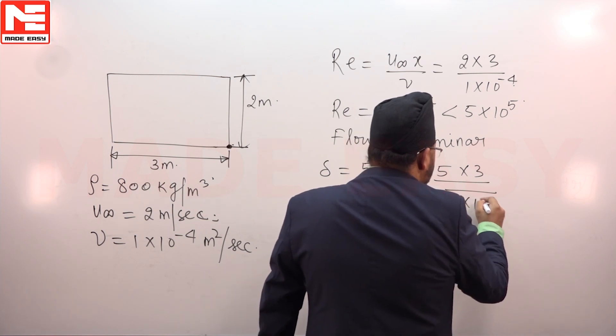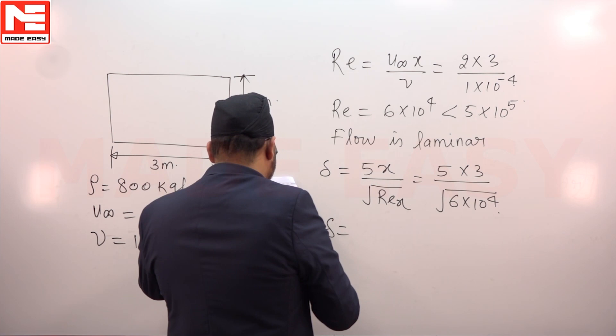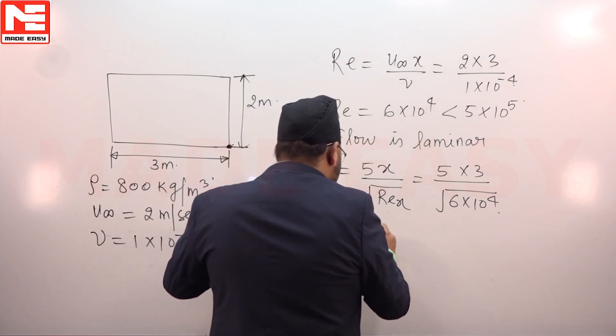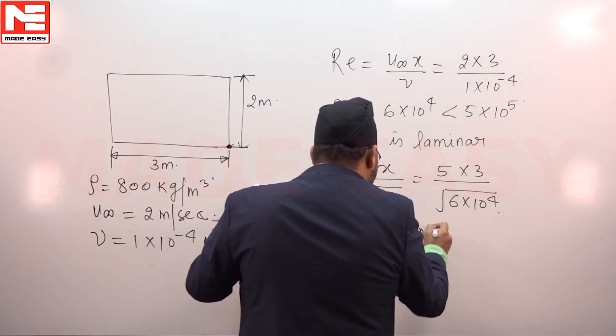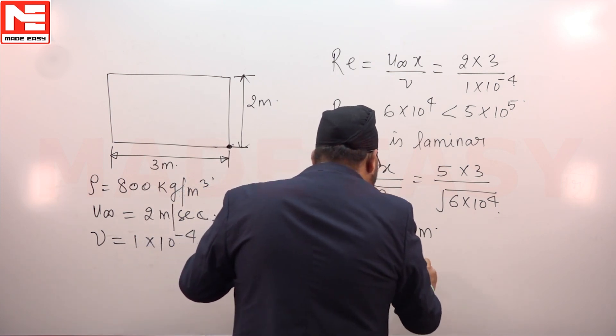So delta will come out to be 0.06124 meters or 61.24 mm.